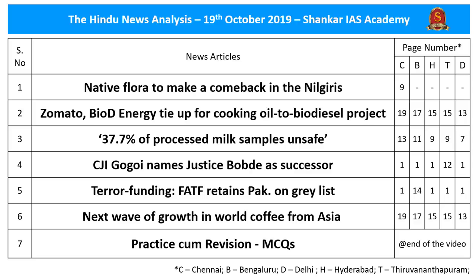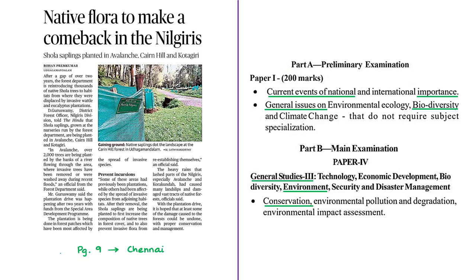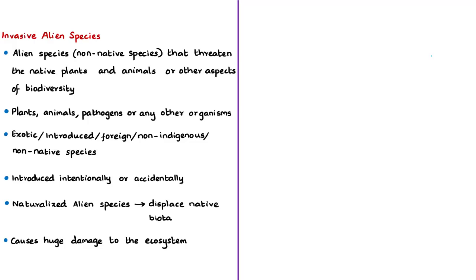Let's move on to our first article analysis for the day. This news discussion is based on invasive alien species. The syllabus relevant to the analysis of this news article is given here for your reference. To understand the news article, let us first discuss what we mean by invasive alien species. An invasive alien species is an alien species, which means it is not native to the place and belongs to a foreign country or some other location.